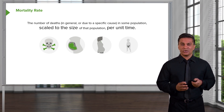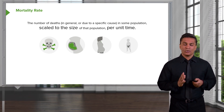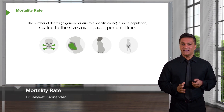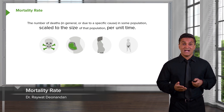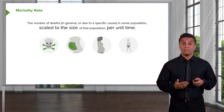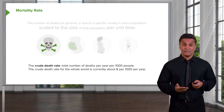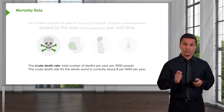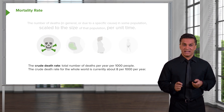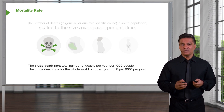When we talk about mortality rates, there are literally scores of different ways of expressing mortality. Mortality is simply how often people are dying in a population. The most basic measurement of mortality is the crude death rate — that's the total number of deaths per year, usually per thousand people.